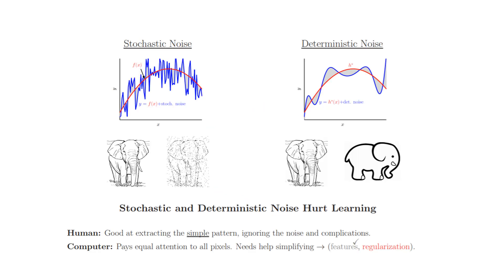We saw two sources of noise in our data. The first one was stochastic, and the second one was deterministic. Stochastic noise is a result of the data itself — all measurement error is stochastic error. The analogy was: here is my target, and this is the data which has a lot of extra things. As a human I can extract the pattern and say this is an elephant — I can ignore the noise, but the computer won't. We need to help the computer understand what is noise.